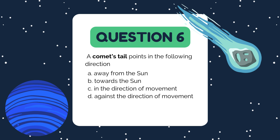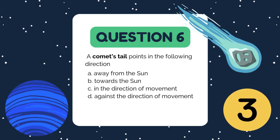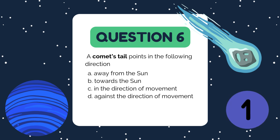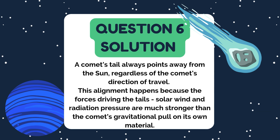Time for a cosmic traveler question. A comet's tail points in which direction? A. Away from the sun, B. Towards the sun, C. In the direction of movement, D. Against the direction of movement. The correct answer is A. Away from the sun. A comet's tail always points away from the sun, no matter which direction the comet is traveling. This happens because solar wind and radiation pressure overpower the comet's weak gravitational pull, pushing the material in the tail outward.